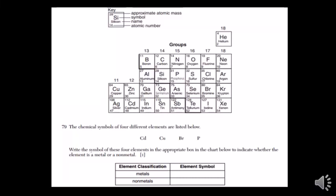The chemical symbols of four elements are listed below. We've got Cd, which is cadmium.